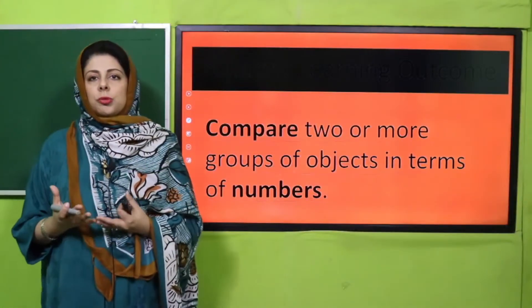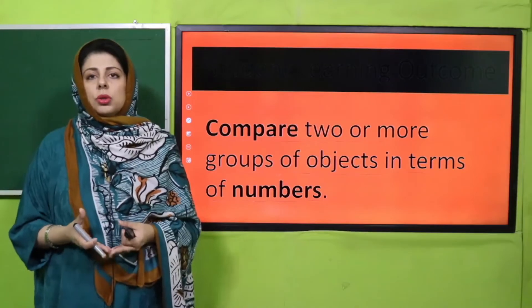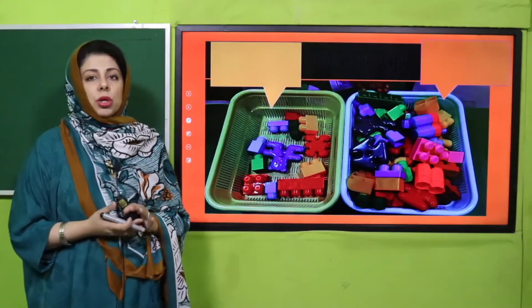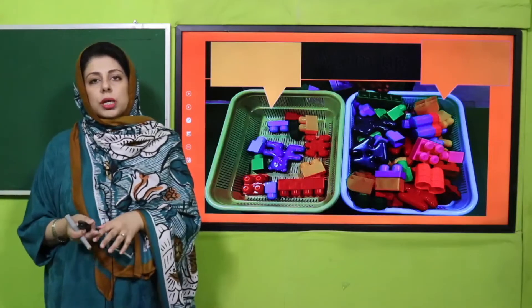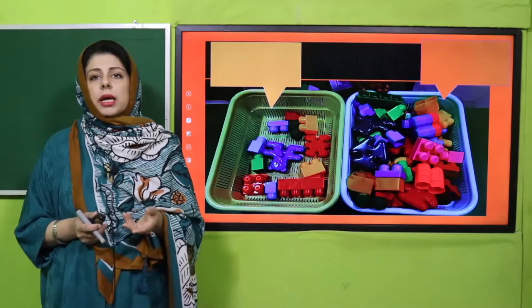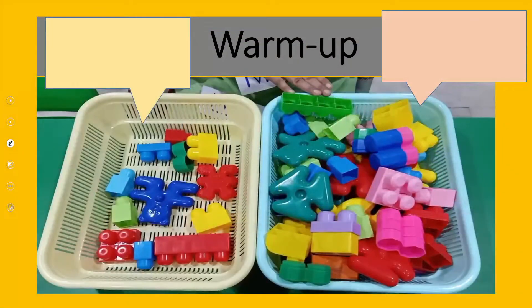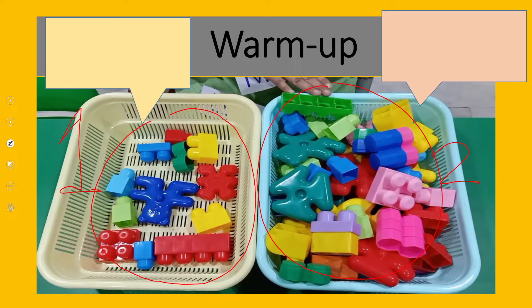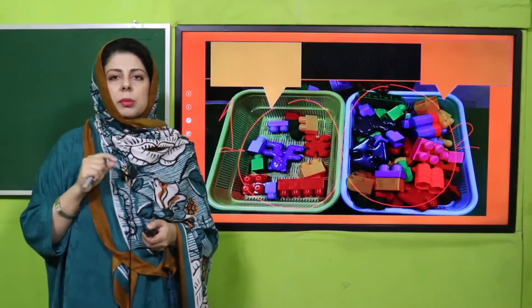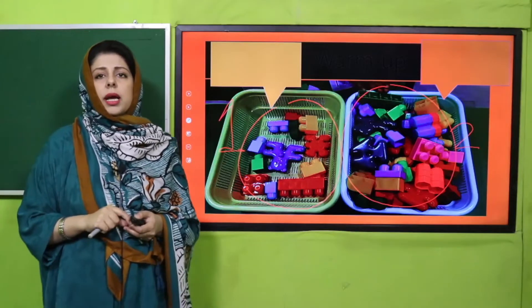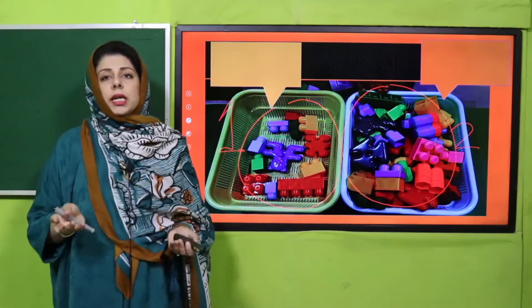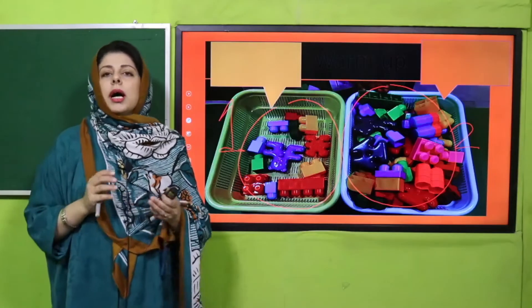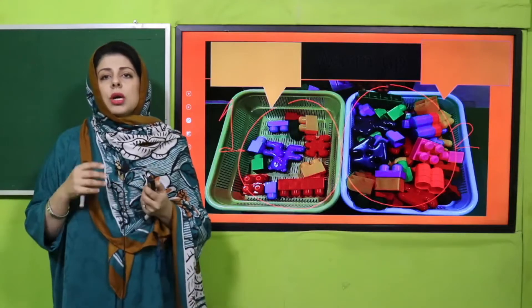آج ہم comparison کرنے لگے ہیں groups کا اور پھر ان کی interpretation کریں گے through numbers۔ اس سے مراد یہ ہے کہ جب ہم چیزوں کو count کریں گے اور پھر وہ number دیکھ کے بتائیں گے۔ For example, look at basket number one and basket number two. Mathematics میں ہم نے ہر چیز کو numbers کے ساتھ represent کرنا ہوتا ہے — more and less کو numbers کے ساتھ represent کرتے ہیں۔